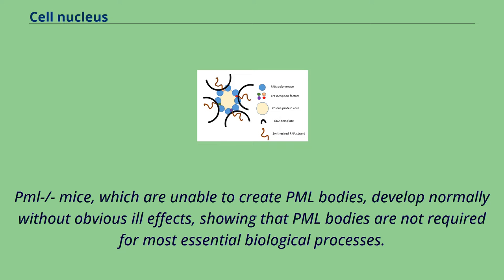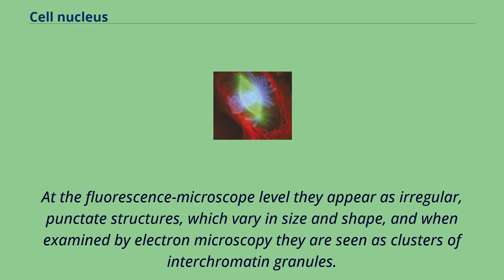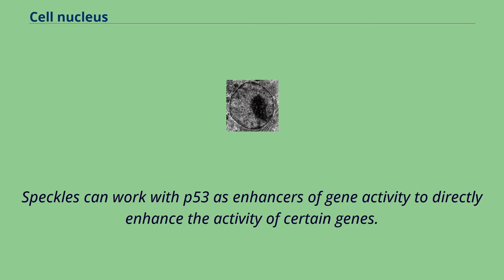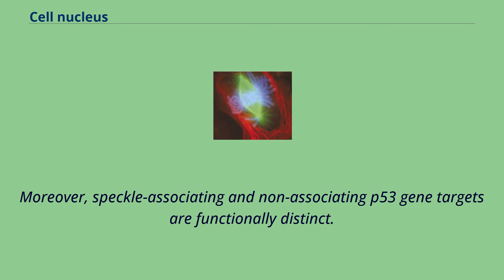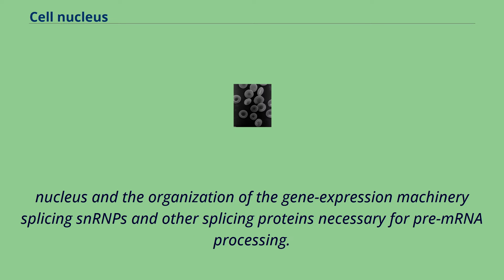Speckles are subnuclear structures that are enriched in pre-messenger RNA splicing factors and are located in the interchromatin regions of the nucleoplasm of mammalian cells. At the fluorescence microscope level they appear as irregular, punctate structures which vary in size and shape, and when examined by electron microscopy they are seen as clusters of interchromatin granules. Speckles are dynamic structures, and both their protein and RNA-protein components can cycle continuously between speckles and other nuclear locations, including active transcription sites. Speckles can work with P53 as enhancers of gene activity to directly enhance the activity of certain genes, and speckle-associating and non-associating P53 gene targets are functionally distinct.